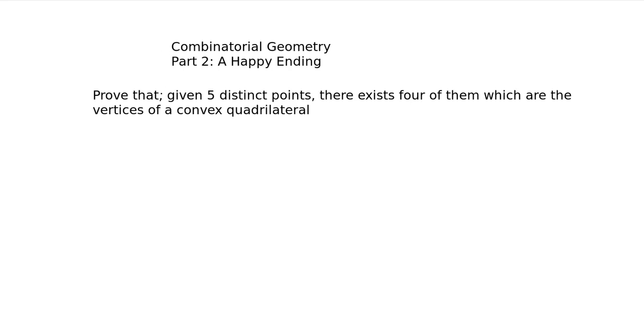Welcome back to part two of combinatorial geometry. In this video we're going to be looking at what is called the happy ending problem. It says to prove that, given five distinct points, there exists four of them which are the vertices of a convex quadrilateral.